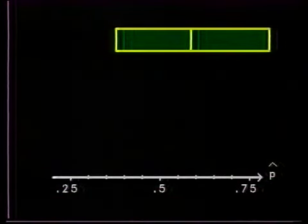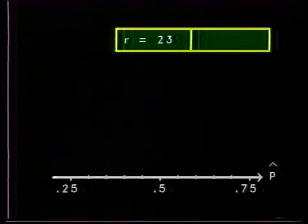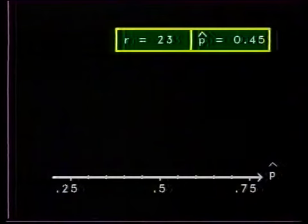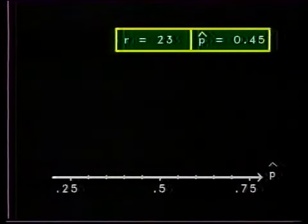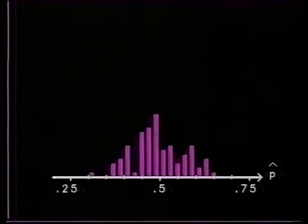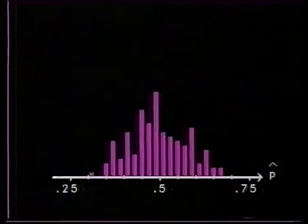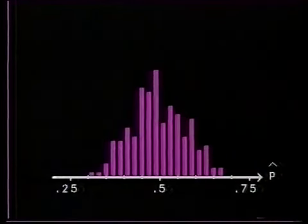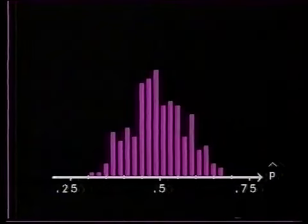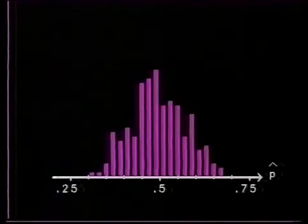So the first observation in the simulation is r equals 23, giving an estimate p-hat of 0.45. Let's enter that value into a histogram and continue simulating further values. We can see that the estimates are centred around the true value of p, 0.5, but nevertheless, there's quite a spread with some estimates quite a way above or below 0.5.